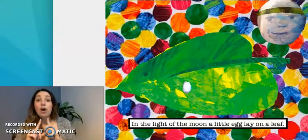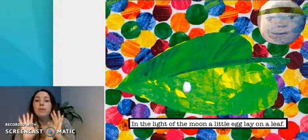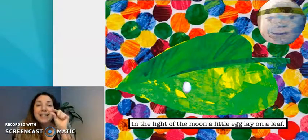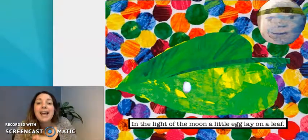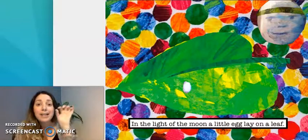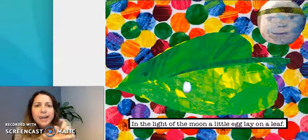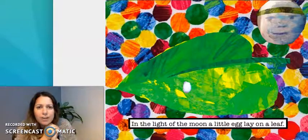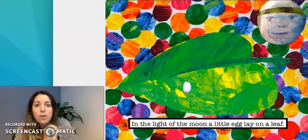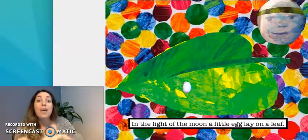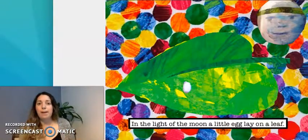In the light of the moon, de la luna, a little egg lay on a leaf. A little egg lay on a leaf. What is an egg? Do you know? An egg. A white egg. Un huevo. An egg on a leaf. A green leaf. Una hoja verde.